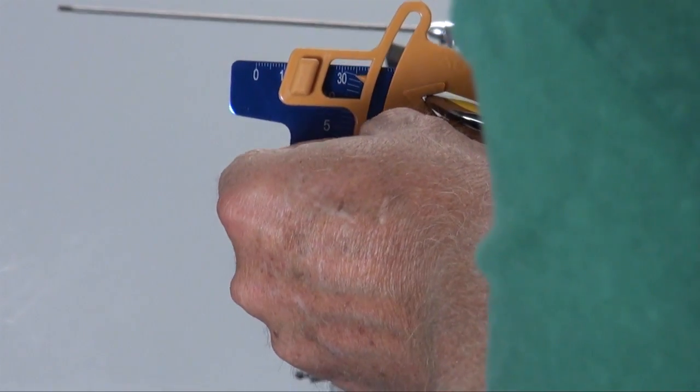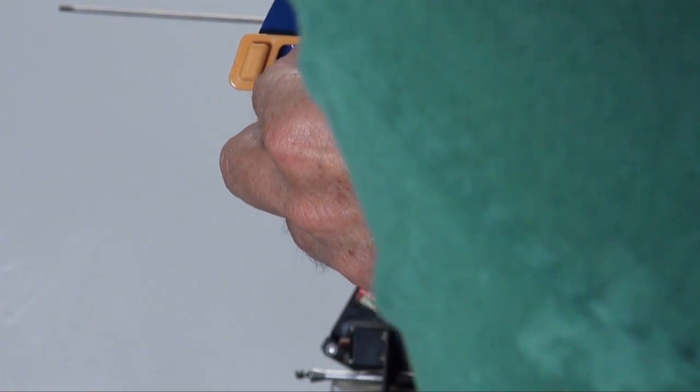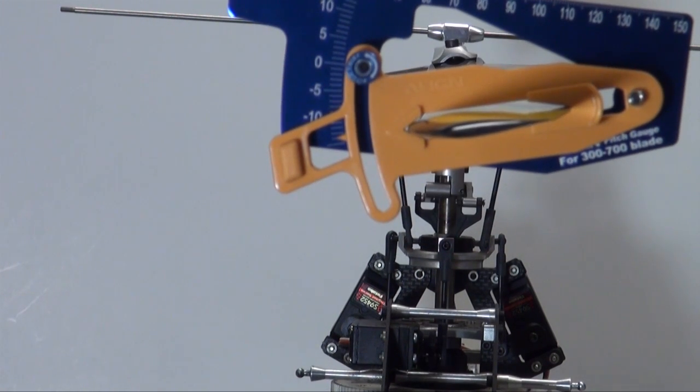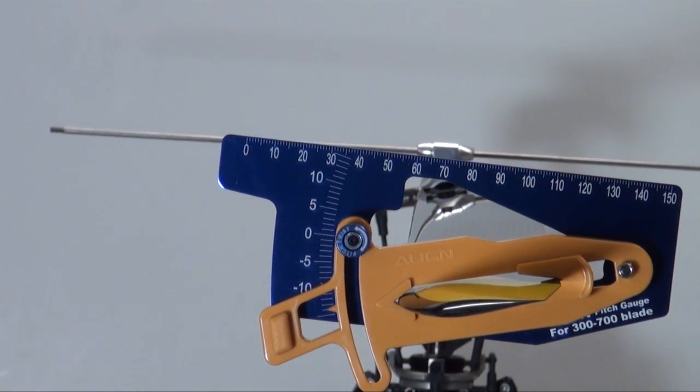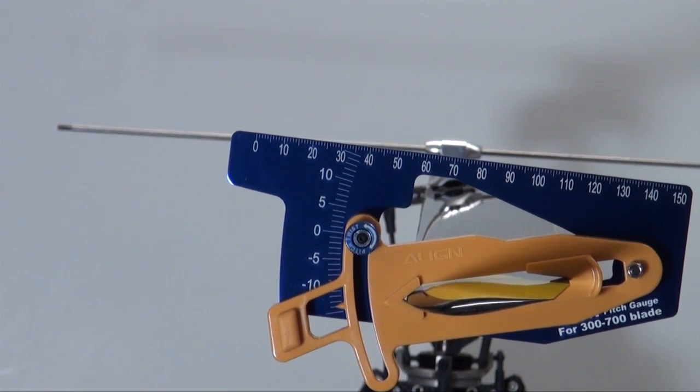When you get done with that, set it to minus 14. Move your stick all the way down. I've got to keep adjusting the height of this camera for some reason. Move it all the way down. And then use your rudder stick to adjust it so that the top of the pitch gauge is lined up with the fly bar. And then when you're done, push the button, and then you're done with step K. And you're done with the pitch gauge at that point.